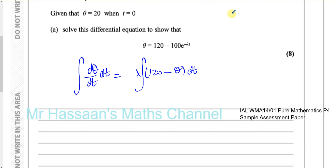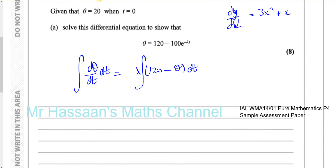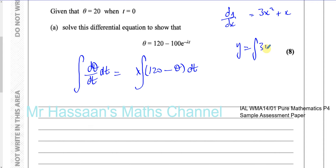When you have something like dy/dx equals 3x squared plus x, and you want to integrate that, basically you are solving this differential equation. A differential equation simply means an equation that starts off with a differential in it. This is called a first order differential equation because you have a first order differential — you have dy/dx, not d squared y/dx squared. So dy/dx equals 3x squared plus x. When we integrate this, what we're used to writing is y equals the integral of 3x squared plus x with respect to x, then integrate by adding to the power and dividing by the new power.